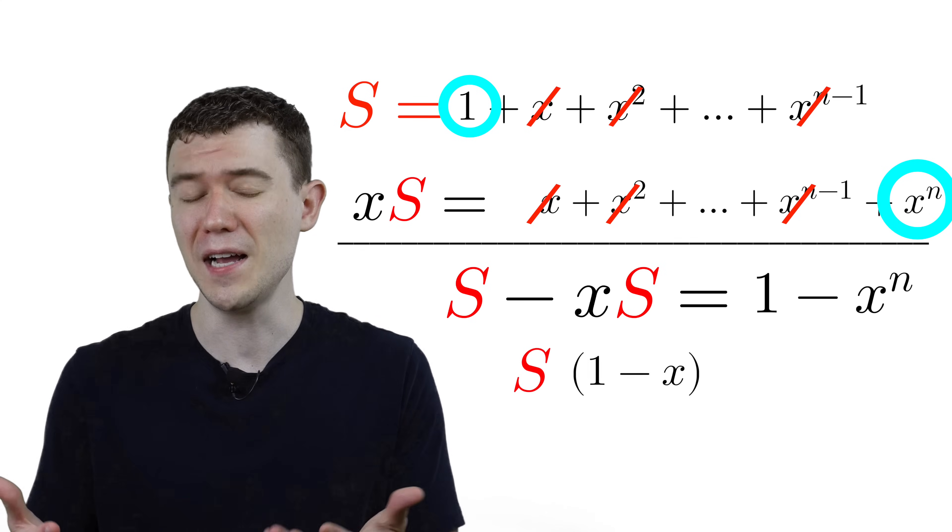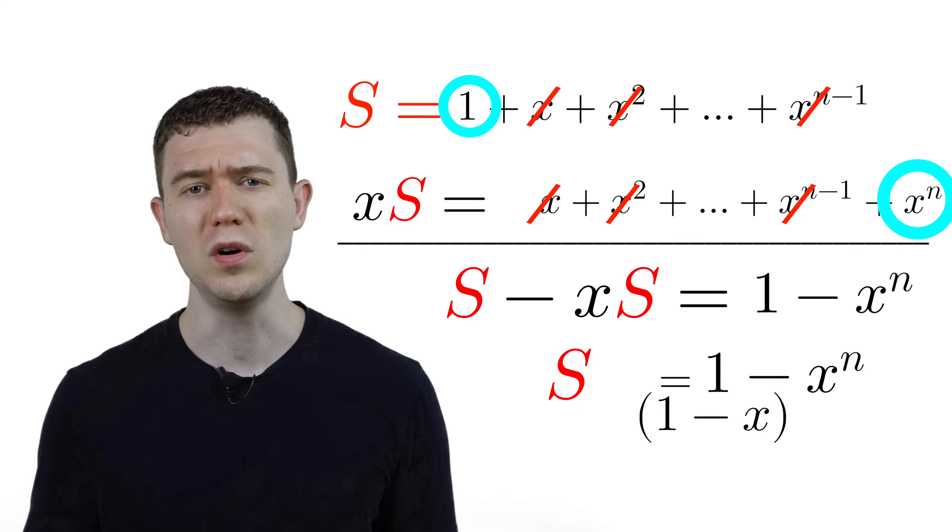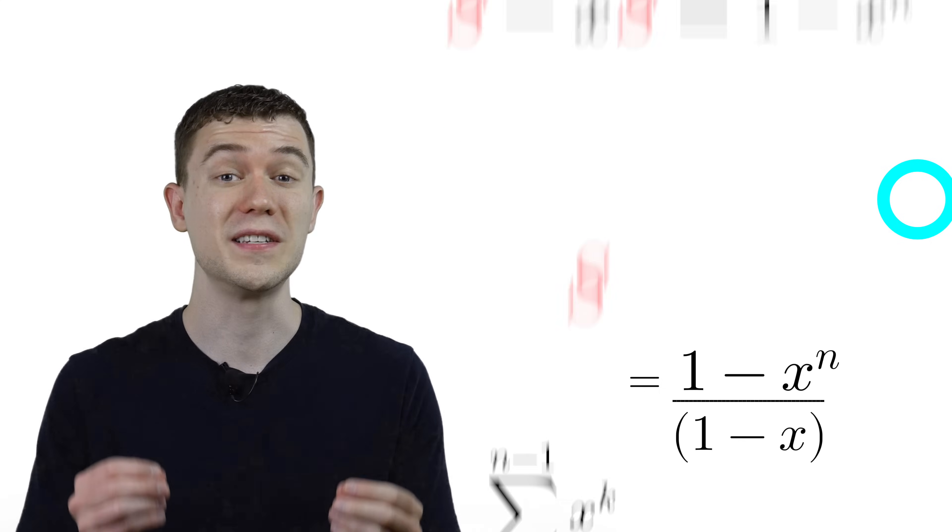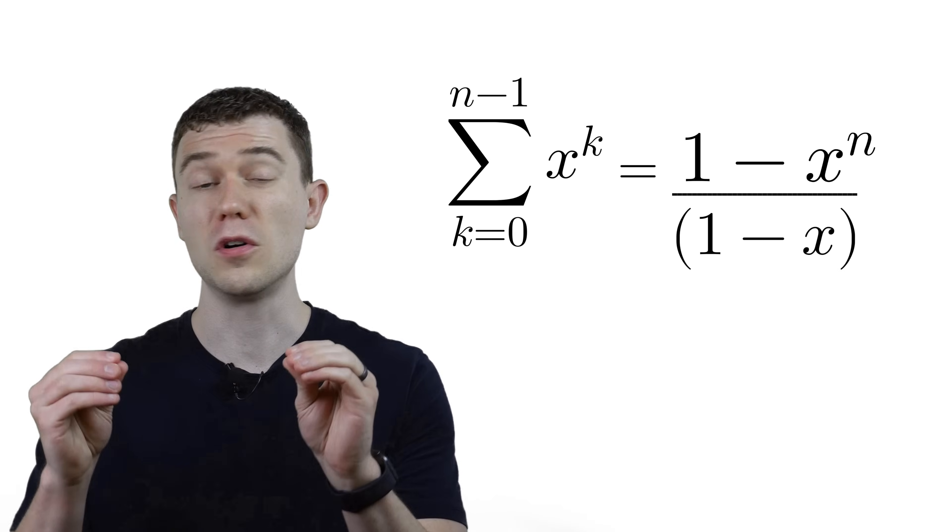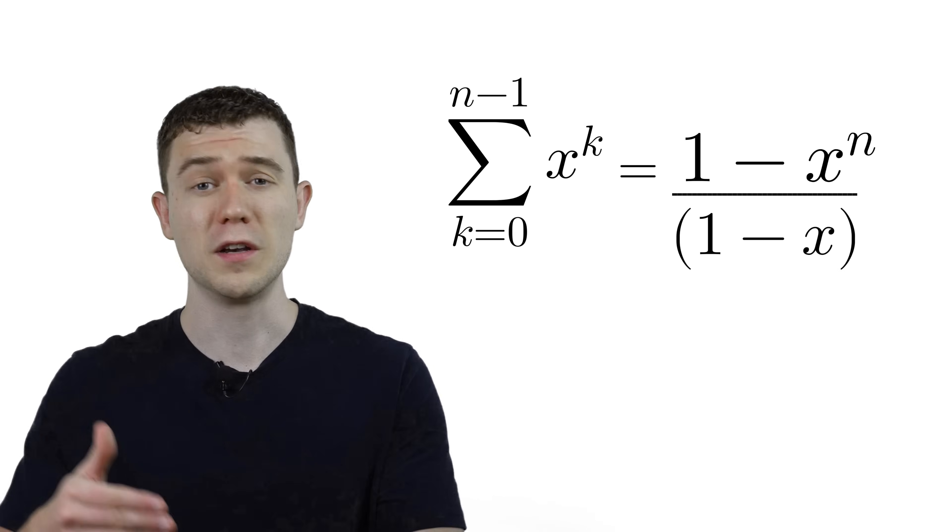Factor out the s on the left, divide by x minus 1, and we have the well-known result for the sum of a finite geometric series. Let's treat this result like a function. Right now, it's composed with x,